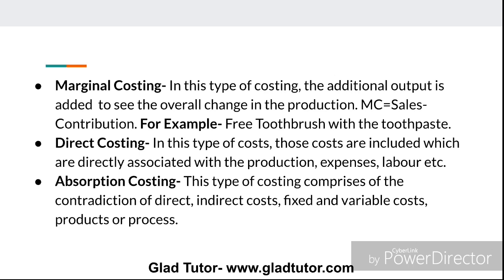The next technique is direct costing. In this technique, those costs are included which are directly associated with the production — expenses, labor, etc. We include direct material, direct expenses, direct labor, and direct wages. Absorption costing comprises both direct and indirect cost, fixed and variable cost — it combines product and process costs by contracting direct with indirect, and fixed with variable costs.